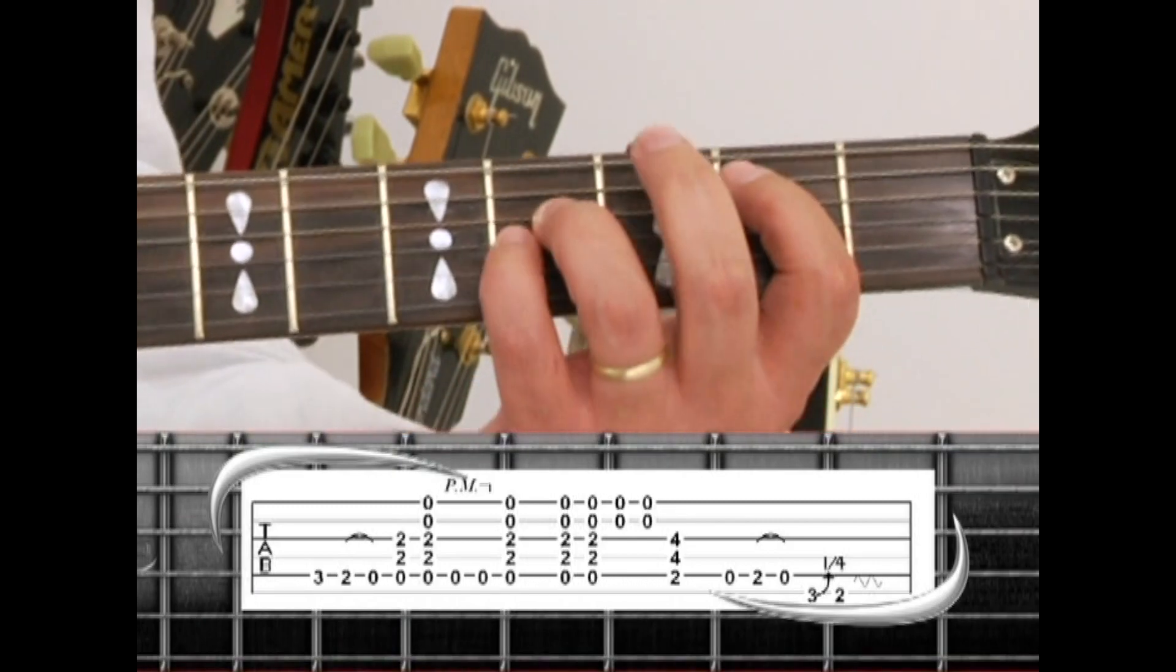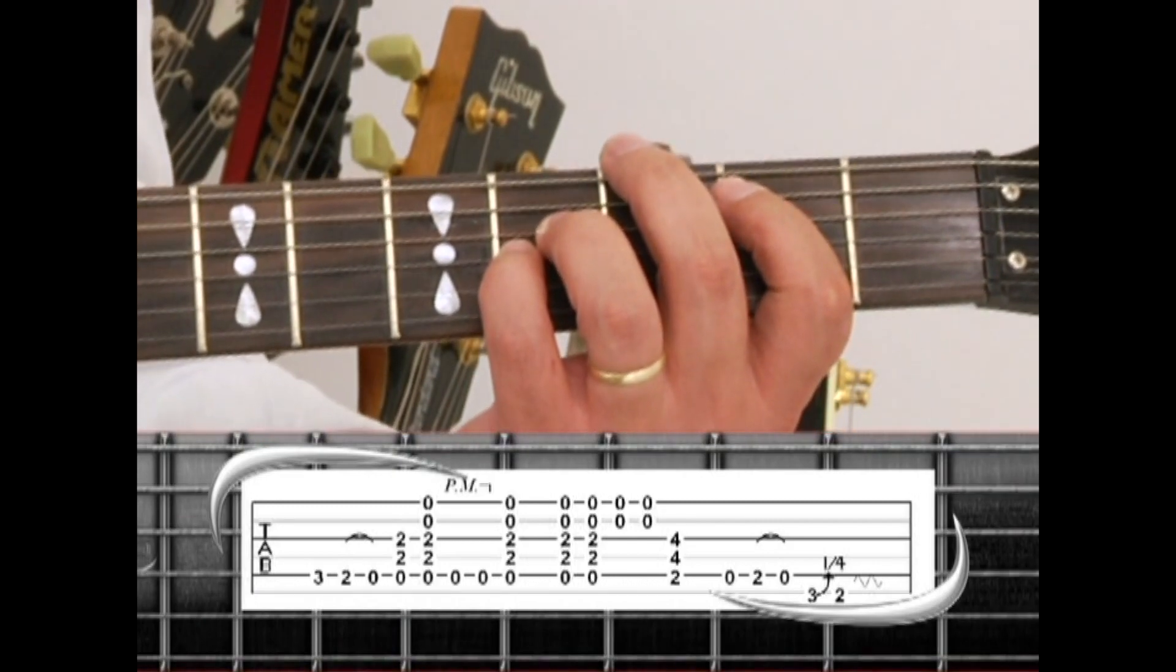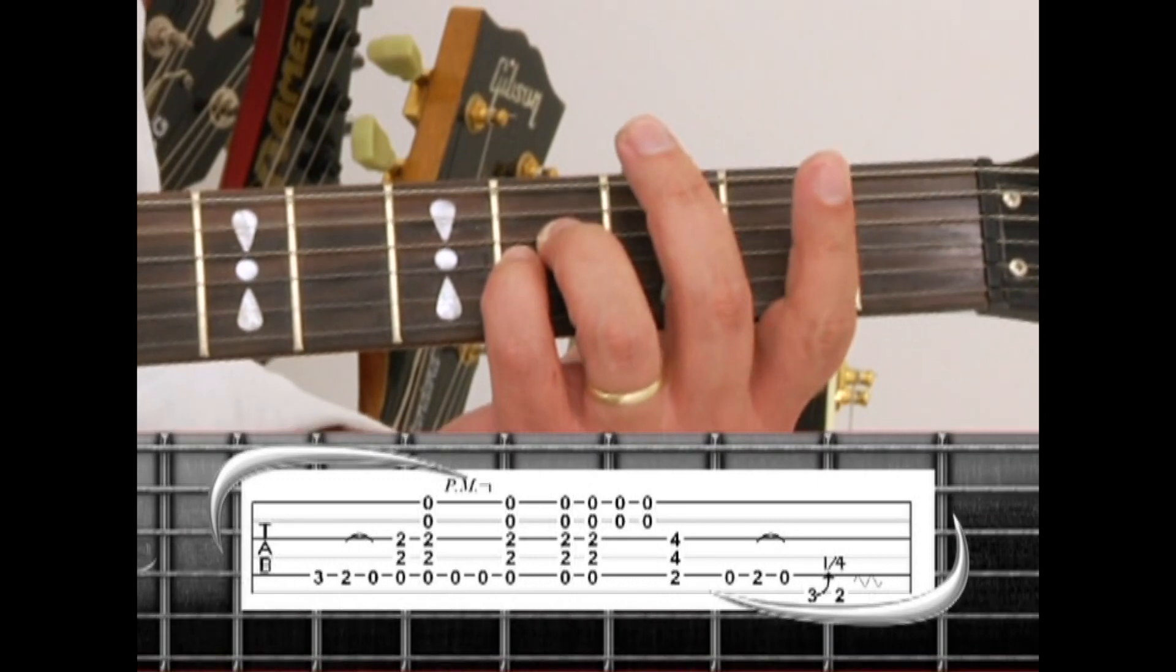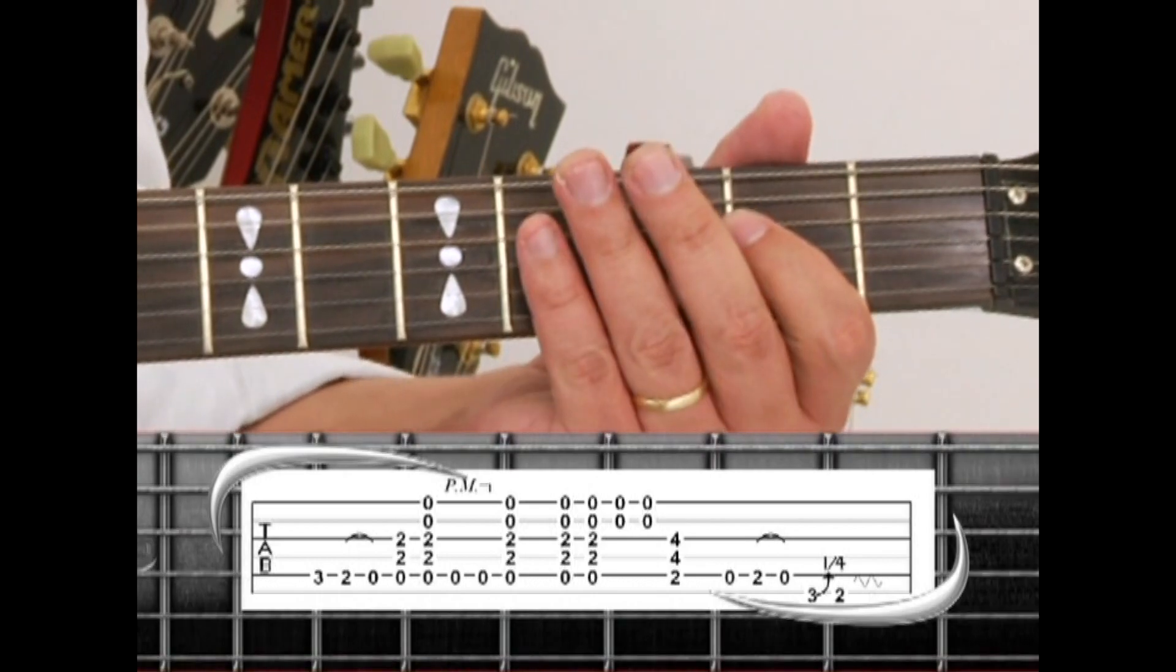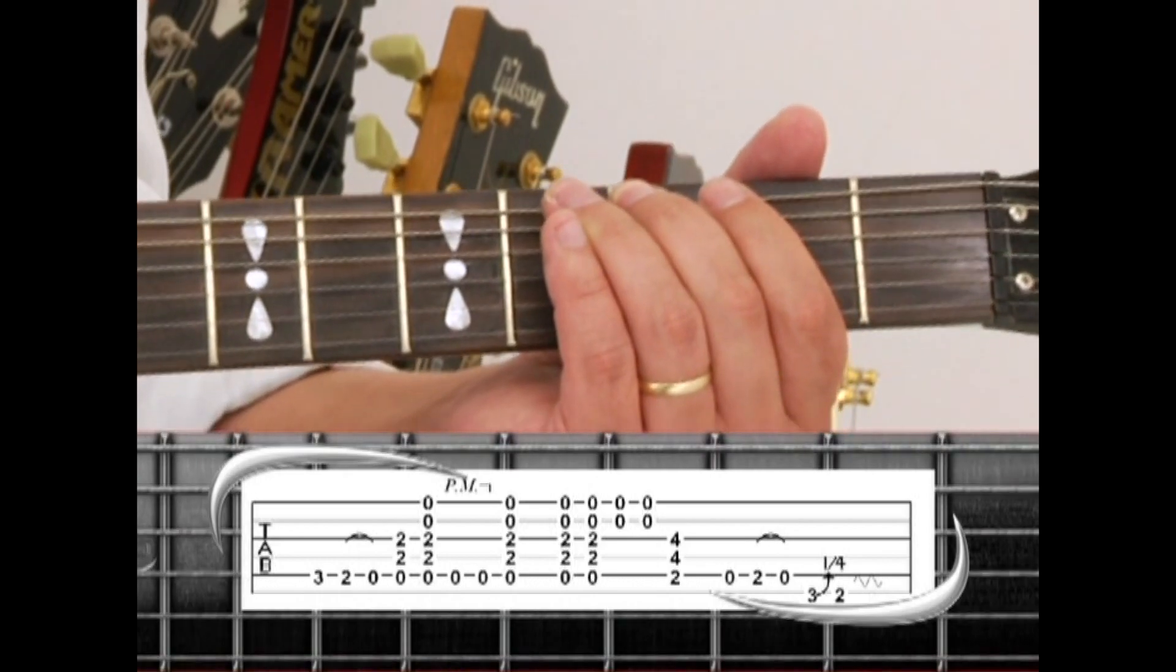Play a single B5, then the walk down riff. 5th string open, 2 pull to open, 6th string 3 with a slight bend, and 2 with vibrato.